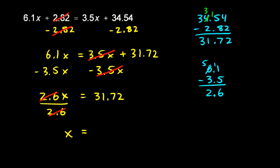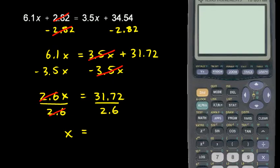Now, on the right, I have 31.72, but if I've divided the left side by 2.6, I also have to divide the right side by 2.6. 31.72 divided by 2.6,